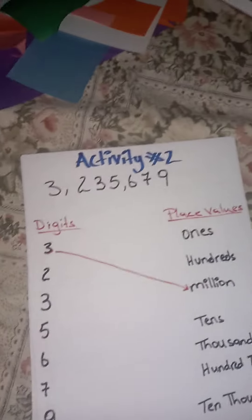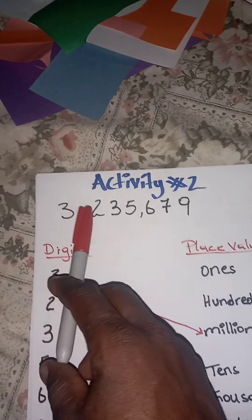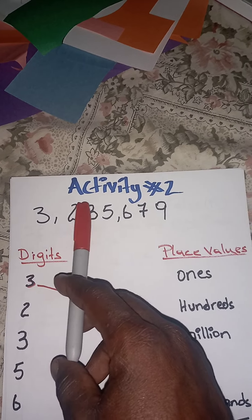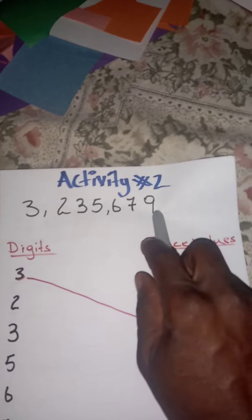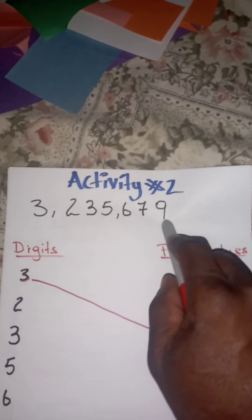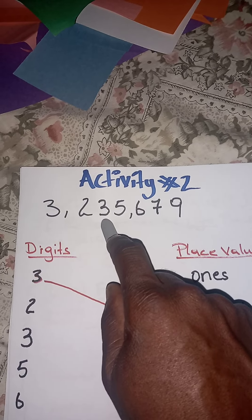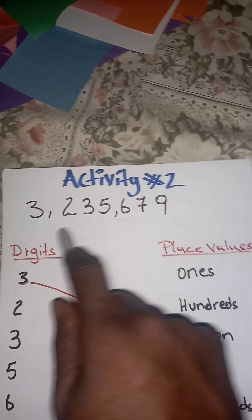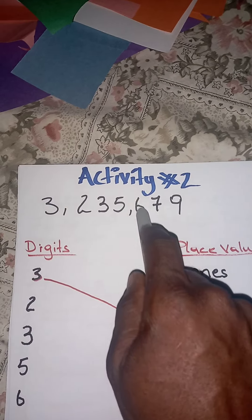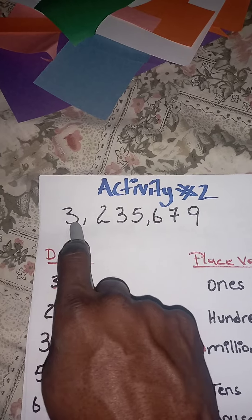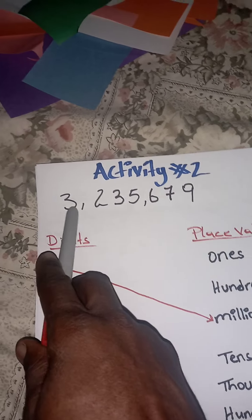Now for activity number two, I have a different number here: 3,235,679. Based on what we remember — think of the money — starting from the right: 1s, tens, hundreds, thousands, 10,000, 100,000, then a million. Before you start matching digits to values, make sure you know the values first. I did number one for you: the three on the left represents one million.